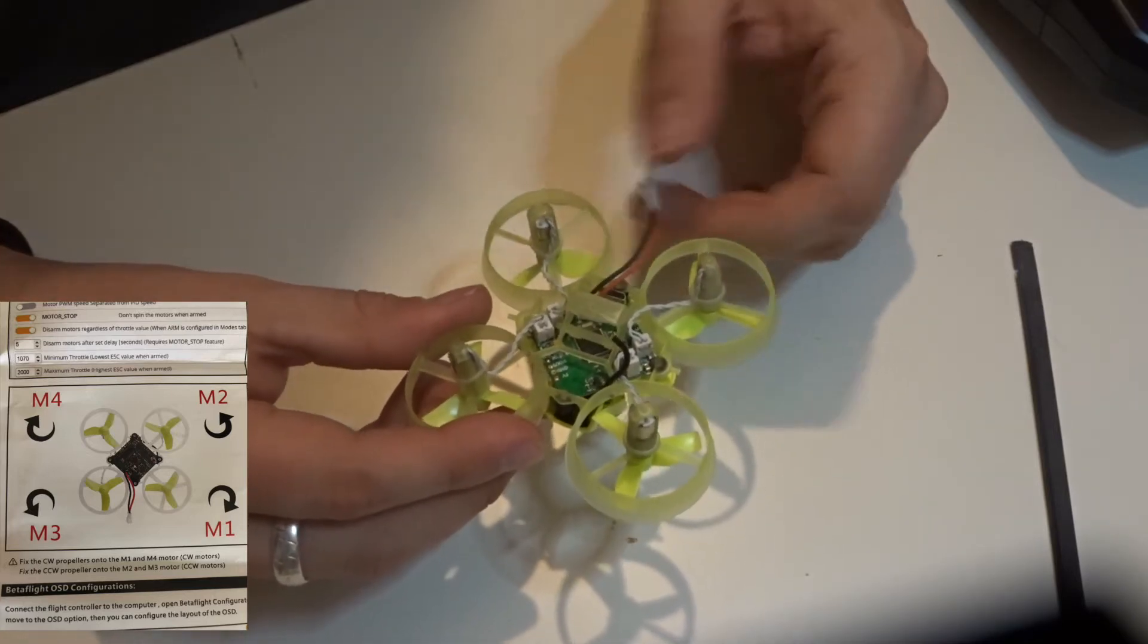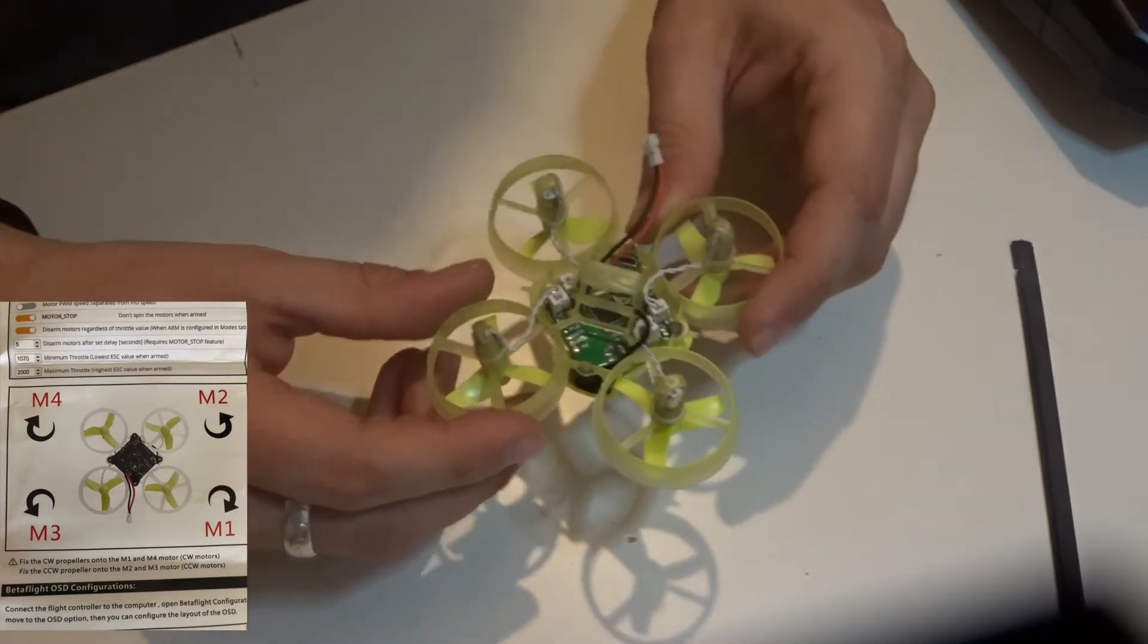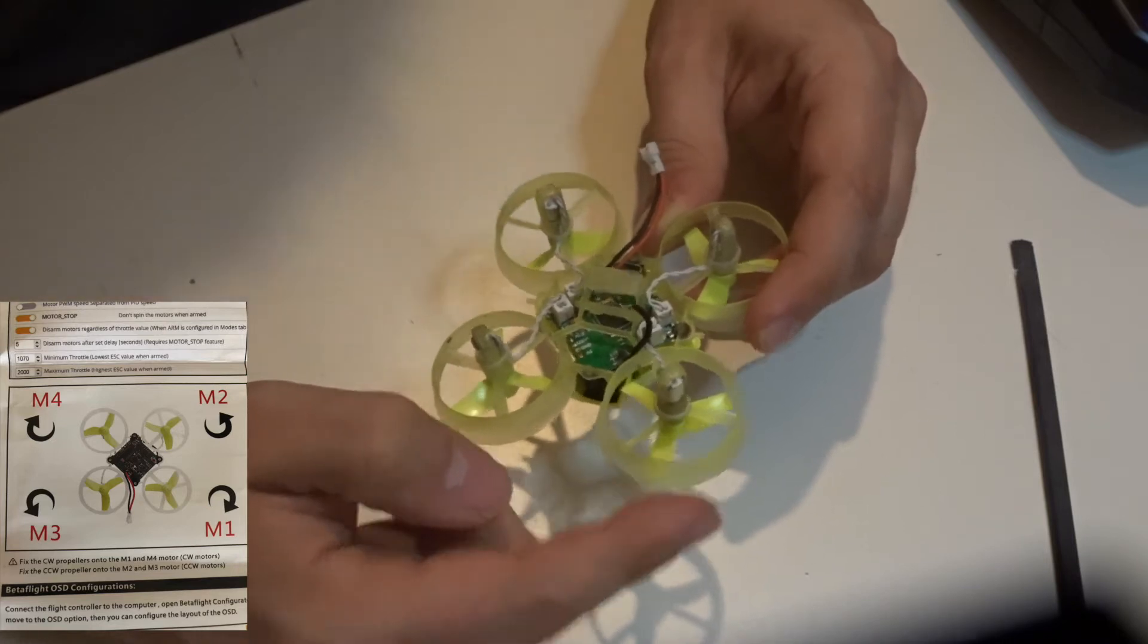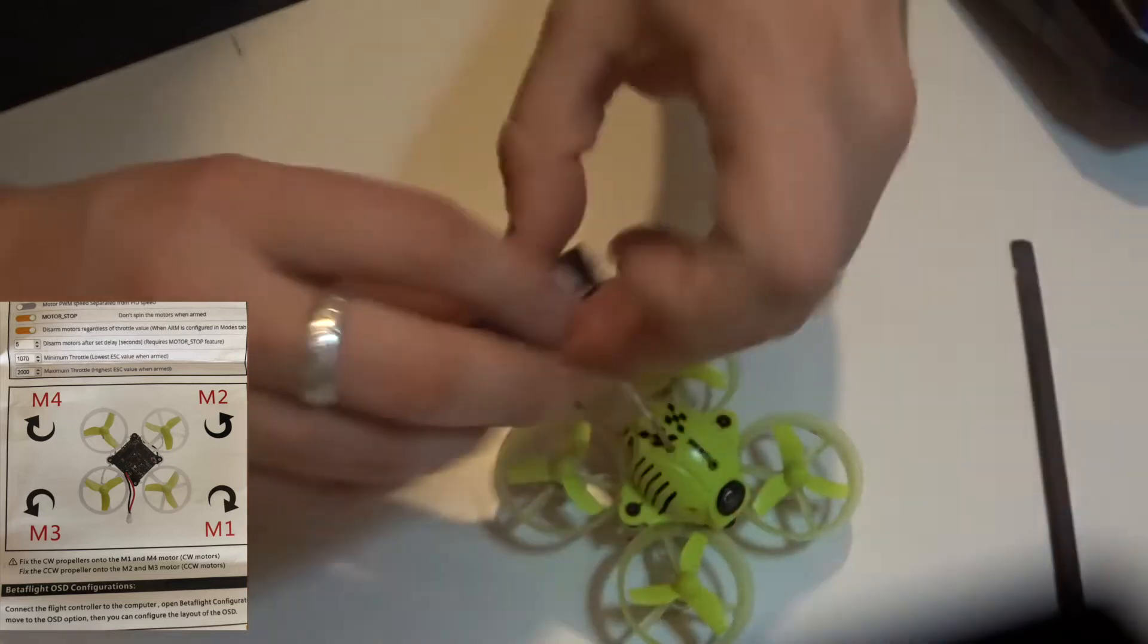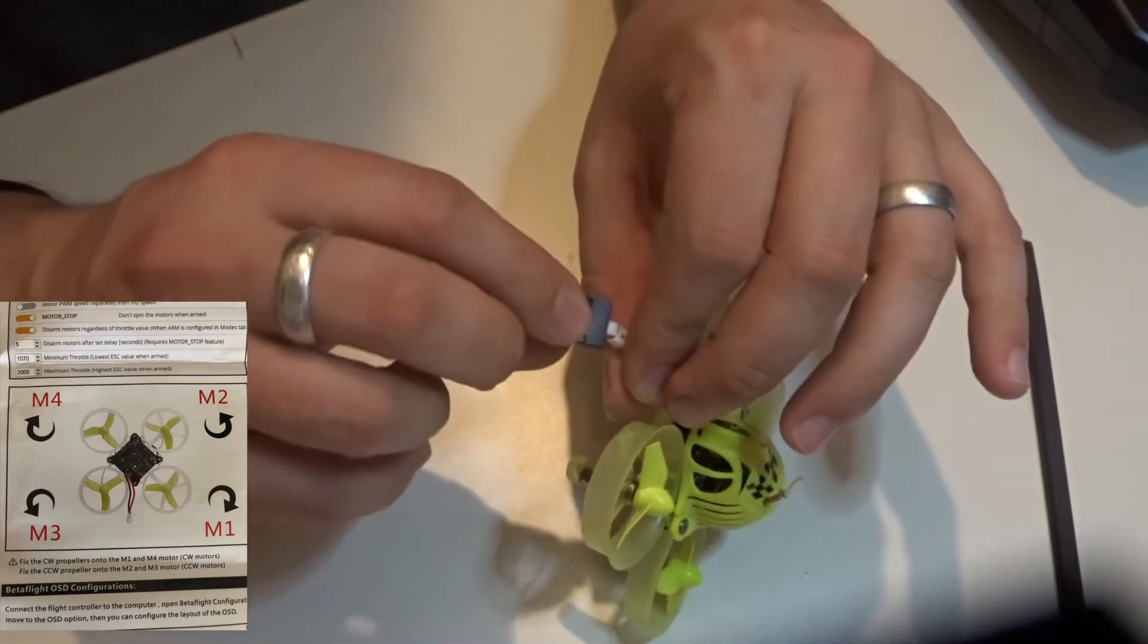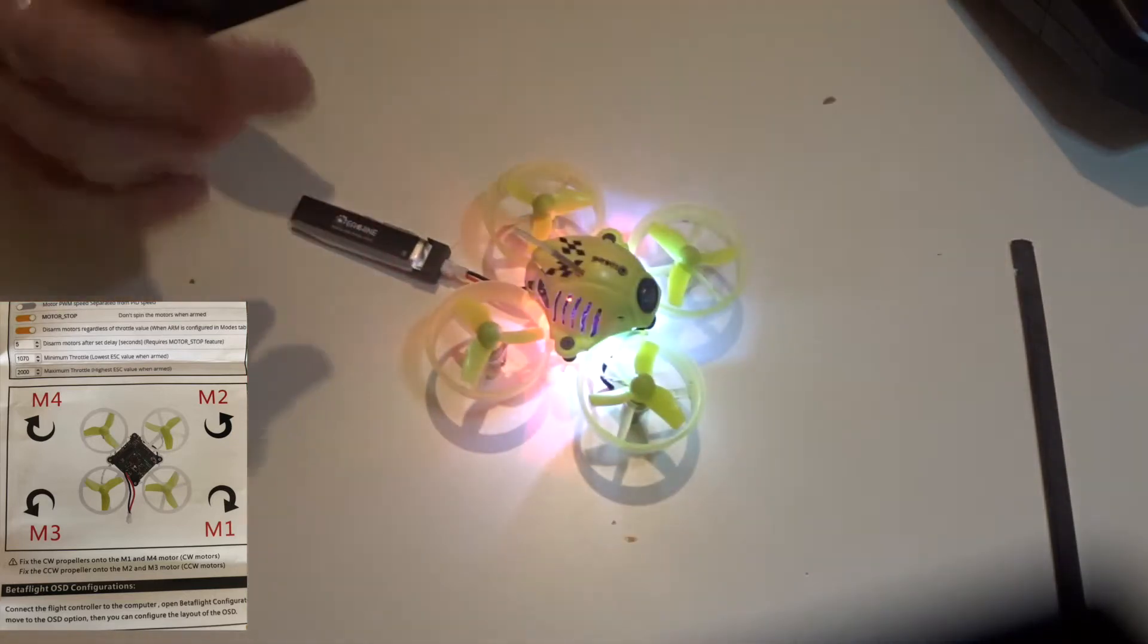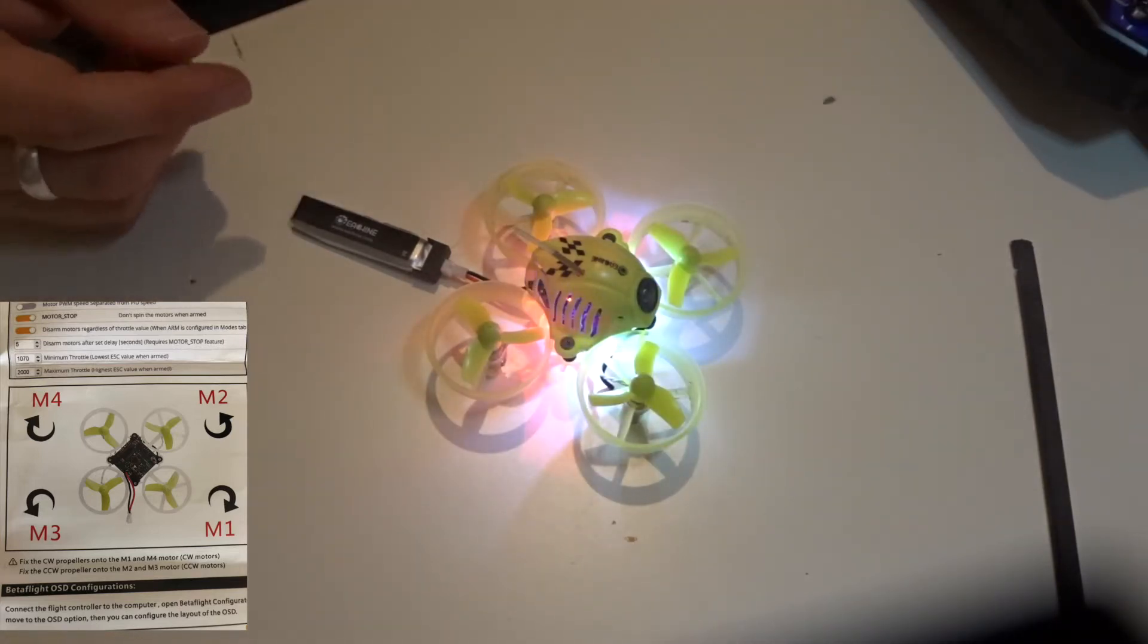Now that is the way that it is portrayed in the manual. So we should have this motor here being M4. M4 should be a clockwise motor. So for this what I'm going to do actually is just to ensure that I've got the right one right from the off. Now what I would say is with these little tiny whoops they're not too powerful, but still stay away from these propellers when they start.